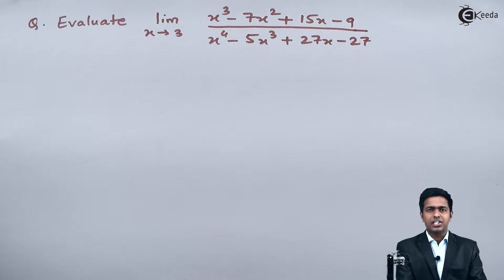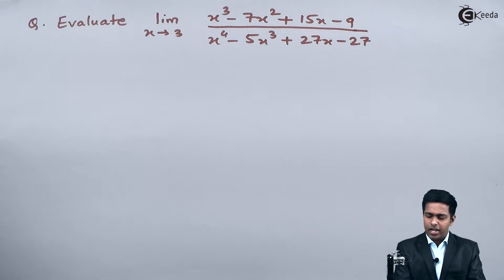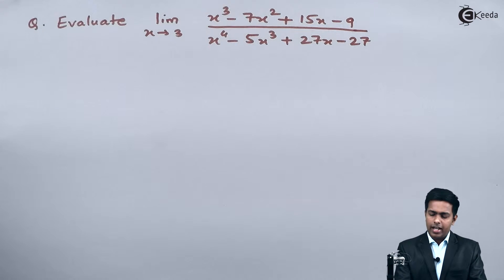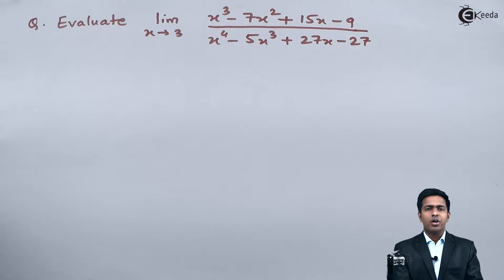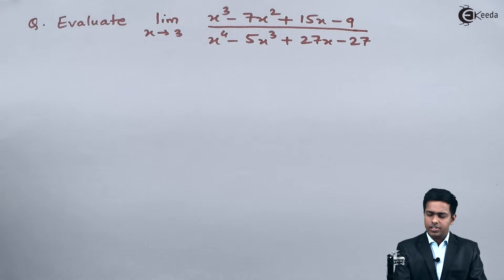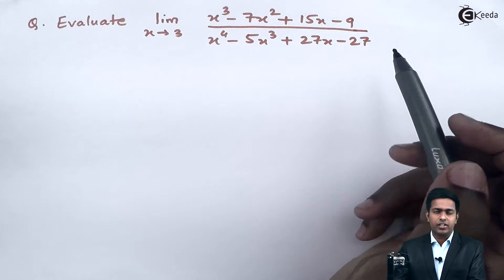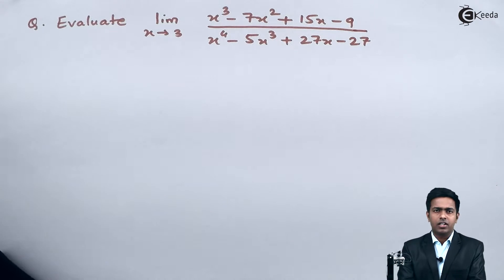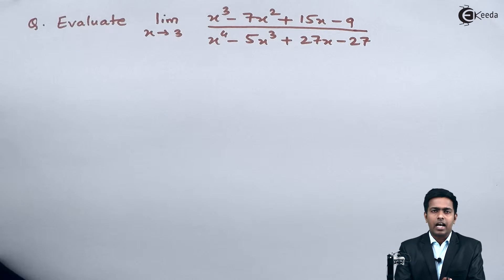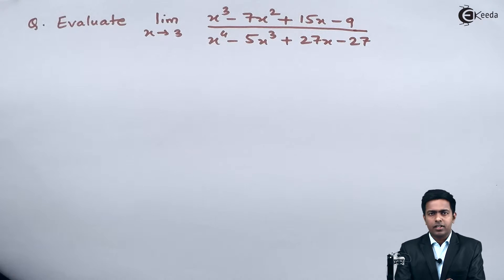Hello everyone. In this problem we have to evaluate the limit as x tends to 3 of (x³ - 7x² + 15x - 9) divided by (x⁴ - 5x³ + 27x - 27). Before starting the solution, let's observe the given function. Since it is an algebraic function, we start with the direct method, and if the direct method fails, we look for some other method.